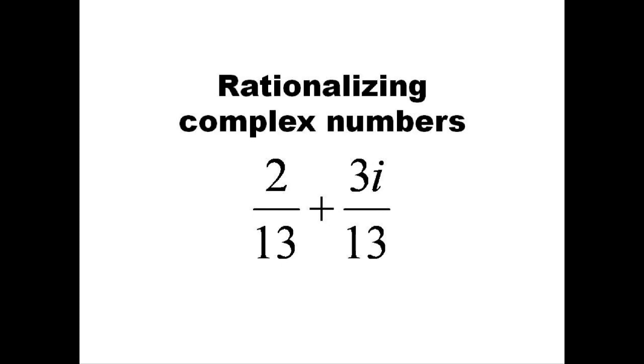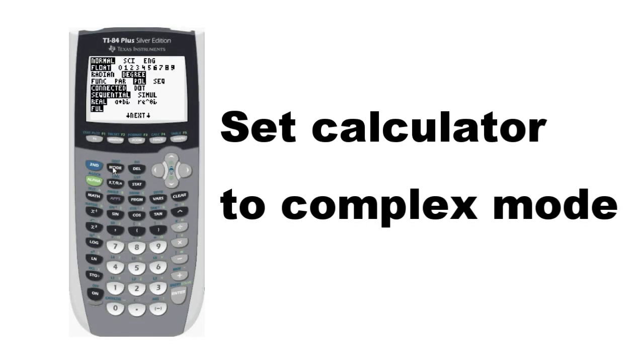Now let's take a look at complex numbers on a graphing calculator. You'll want to start by putting your TI-84 into complex mode. Press mode and select A plus BI for complex. This will allow the calculator to display the square root of negative numbers.